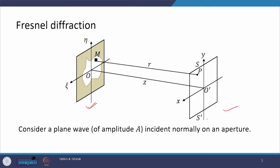This is a schematic arrangement wherein this is our aperture plane and this is our screen plane. In the aperture plane you see the random aperture here — the eta axis is in the vertical direction while the zeta axis is in the horizontal direction. These two axes cross at point O, which is the origin in the aperture plane, while in the screen plane we have horizontal x and vertical y axis, and the center is O'.